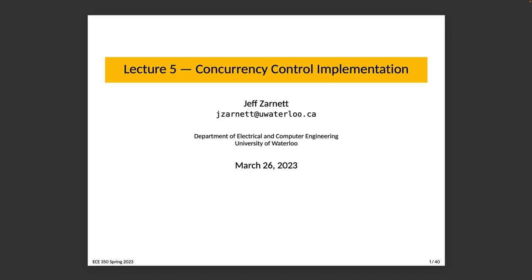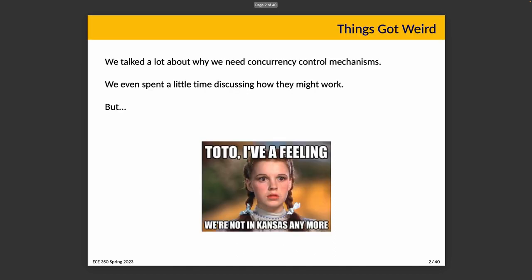Lecture five: concurrency control implementation. In the previous concurrency course EC252, and in the content we just reviewed, we discussed at length the need for concurrency control constructs — why they are useful and what they do in terms of ensuring the correct execution of the user program. In our introduction to the subject we covered certain ideas about how concurrency control might actually be achieved.